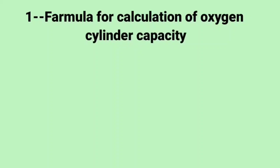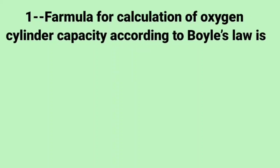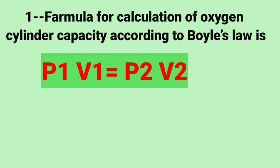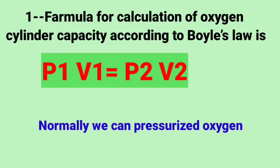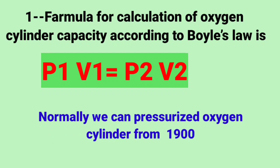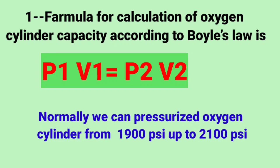First formula for calculation of oxygen cylinder capacity, according to Boyle's law, is P1 V1 is equal to P2 V2. Normally we can pressurize oxygen cylinders from 1900 psi up to 2100 psi.